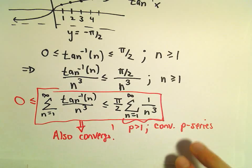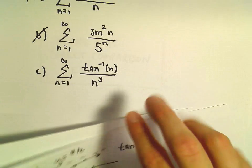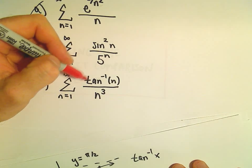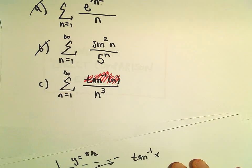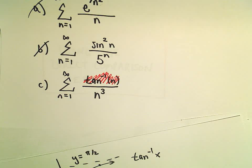So nothing too crazy. If I just looked at this problem and had no clue, I tell people maybe get rid of the stuff you don't like. Maybe you don't like the arctangent of n. If you were just left with 1 over n cubed, hopefully you remember, oh well, that's a convergent p-series.